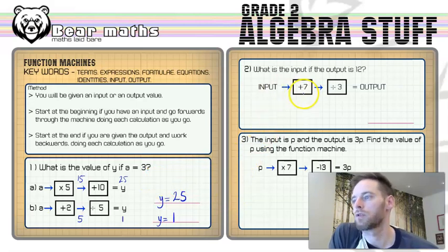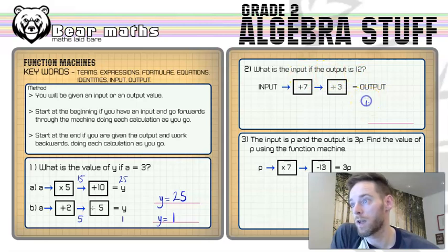Now in question two, this is the one where we've got to start with the output and go backwards and inverse things. So what is the input if the output is 12? Well, we're going to start with our 12 here. We're then going to multiply it by 3, because the opposite thing to dividing by 3 is multiplying by 3. And if we did that, we'd end up with 36.